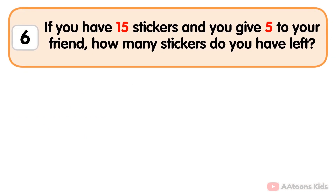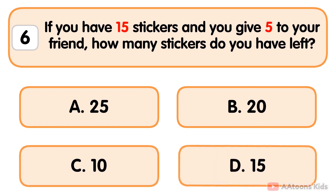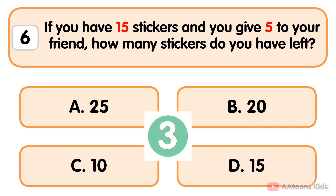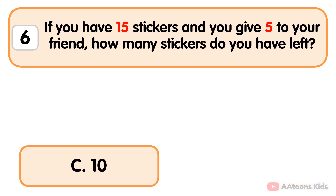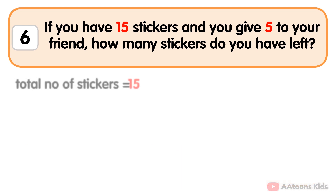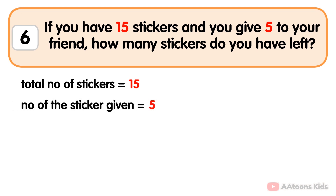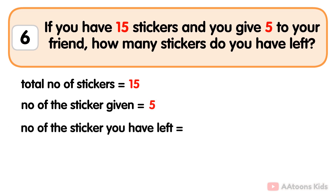If you have 15 stickers and you give five to your friend, how many stickers do you have left? 15 minus 5 is 10. The total number of stickers is 15, the number of stickers given is five. The number of stickers you have left: 15 minus 5 is 10. So you have 10 stickers left.